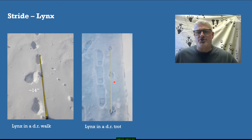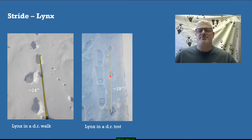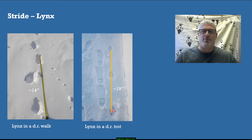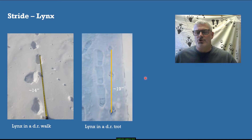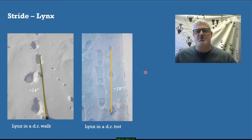This lynx trail measures about 18 to 20 inches half-stride. An important thing to note: when looking at stride, you have to consider how the animal is moving. Notice how straight and narrow this trail is — that's because this lynx is in a direct register trot, not a walk, so the stride length is lengthened out. You have to keep the animal's gait in mind when interpreting these measurements.